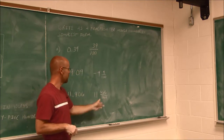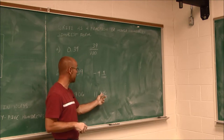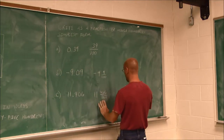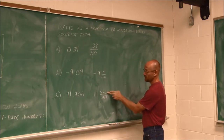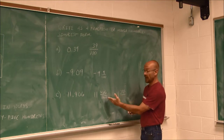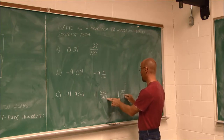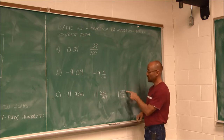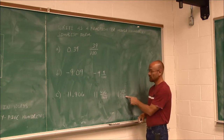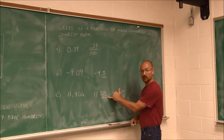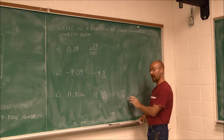But I can reduce 406 over 1,000. I identify that 406 is an even number and 1,000 is an even number. Let's factor out a 2: this would be 11 and 203 — taking half of 1,000 gives us 500. So my reduced number is 11 and 203 five-hundredths. The reason we reduce is that if we're working with a fraction, I'd rather deal with a denominator of 500 than a denominator of 1,000 for any additional math.